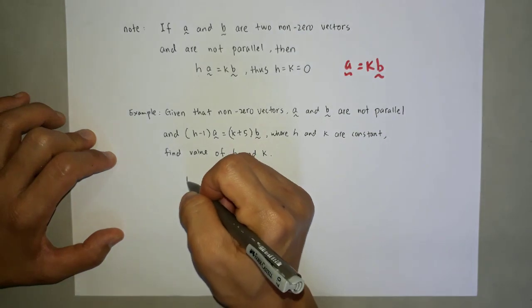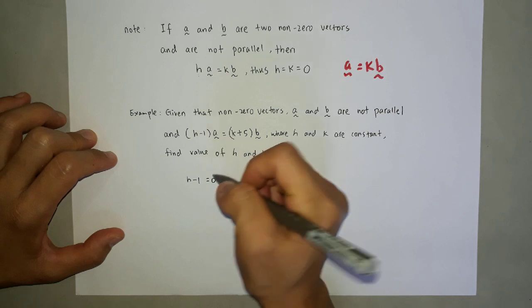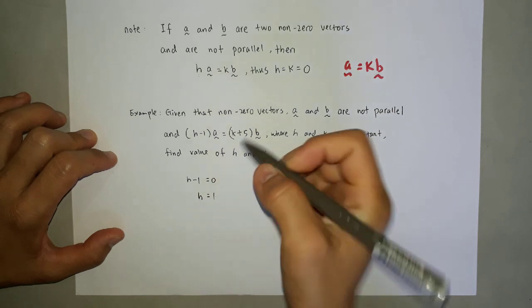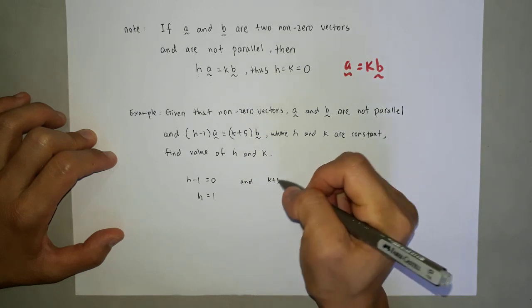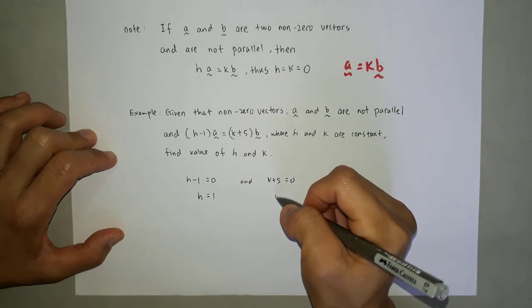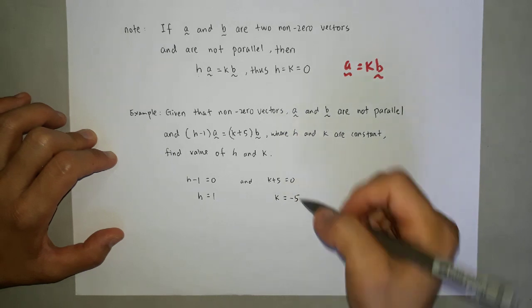Thus, H minus 1 equals to zero, H equals to 1. And K plus 5 equals to zero, K equals to negative 5. Done.